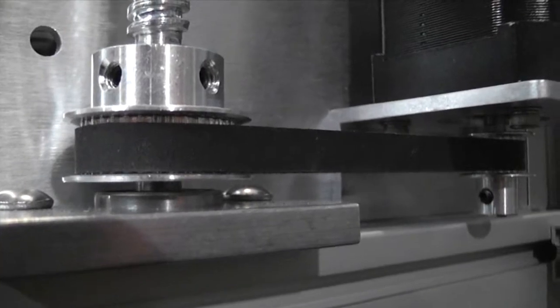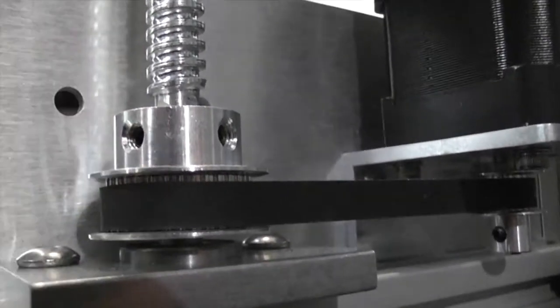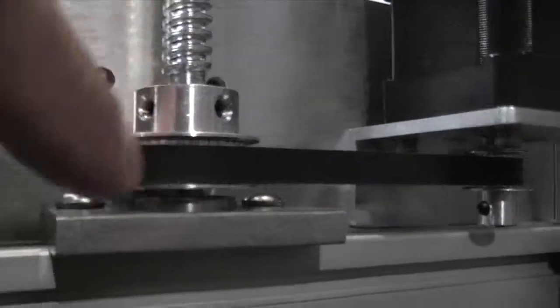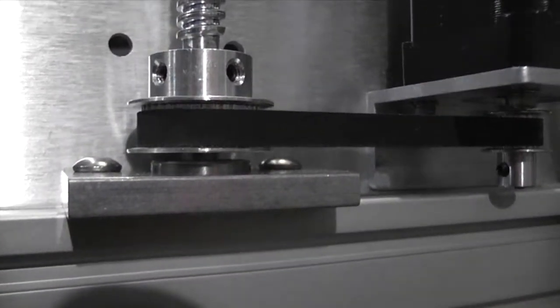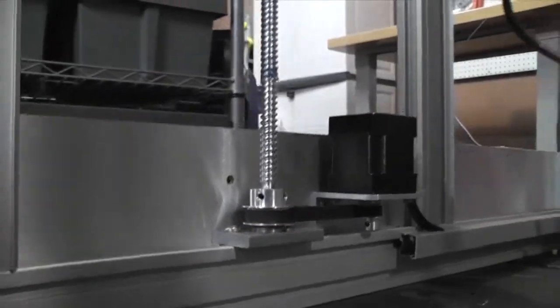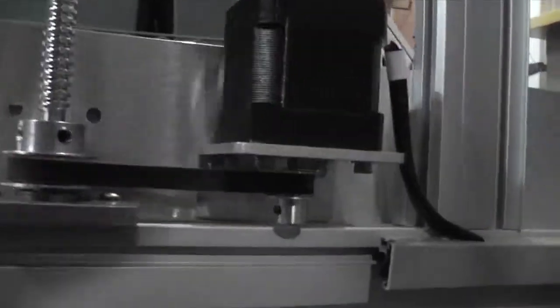That space allows the Z-rod to float on top of the bearing. If it doesn't, it creates friction between the pulley and the bearing and it can slow down the Z-rod and actually stall it out. So that's something you really want to make sure of.